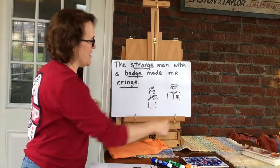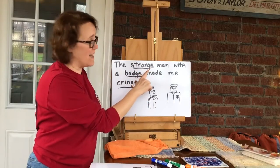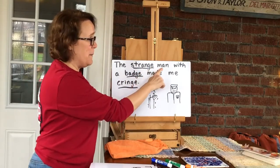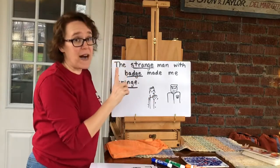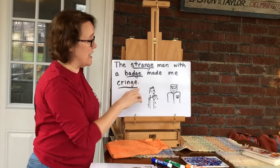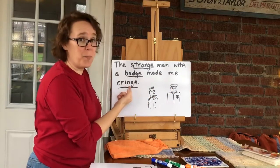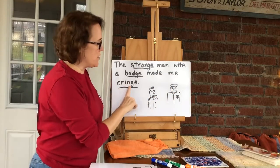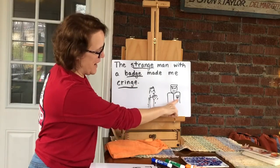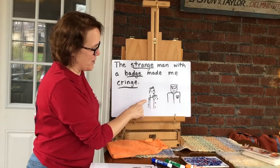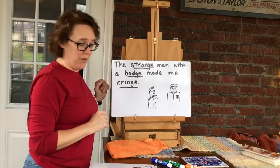Here's the sentence. The strange — there's a blend there, so we just use G-E. Man with a badge — one-letter vowel, use D-G-E — made me cringe. Again, a blend, N-G-E, so we use just the G-E. Here's my strange man with a badge, and here's the person cringing and kind of shaking with fear.